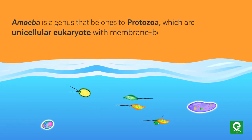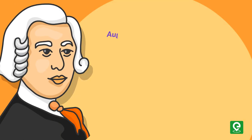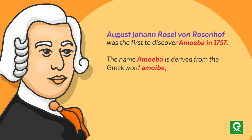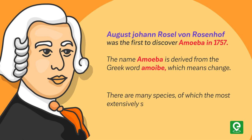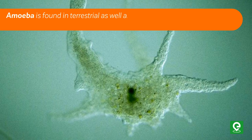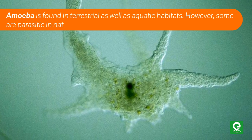August Johann Rosel von Rosenhoff was the first to discover amoeba in 1757. The name amoeba is derived from the Greek word 'amoeba,' which means change. There are many species, of which the most extensively studied is Amoeba proteus.